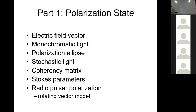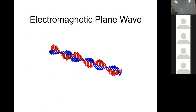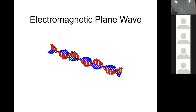We'll look at how those Stokes parameters relate back to the concept of the polarization ellipse. By design — this is Stokes himself in 1852 — he was considering the polarization ellipse when he invented the Stokes parameters. Then I'll talk a little bit about pulsar polarization, how we look at the polarization of a periodic signal from a radio pulsar, and talk a little bit about the rotating vector model.